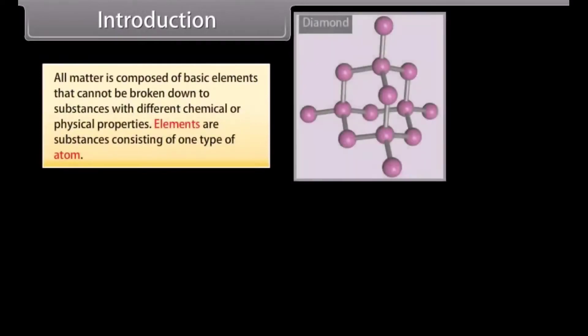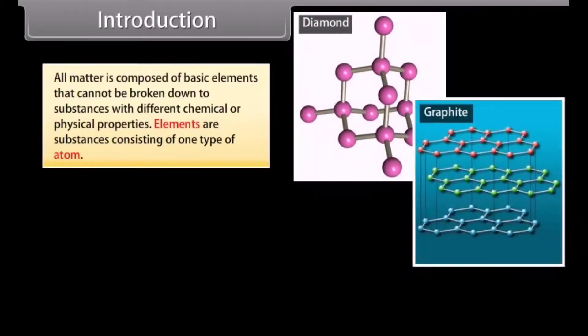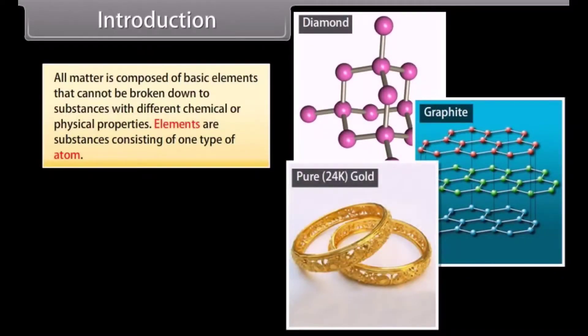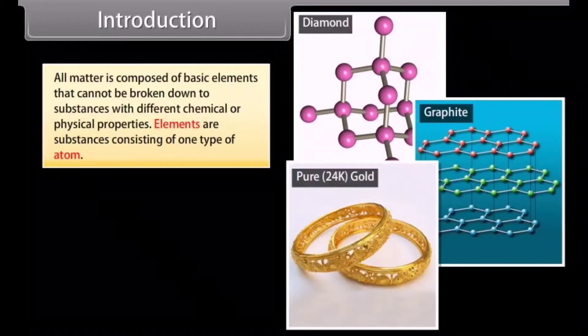Introduction. All matter is composed of basic elements that cannot be broken down to substances with different chemical or physical properties. Elements are substances consisting of one type of atom.